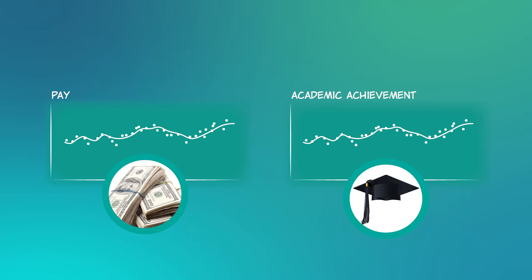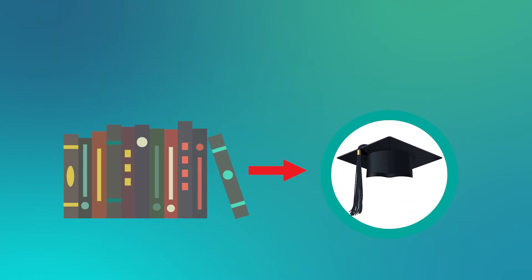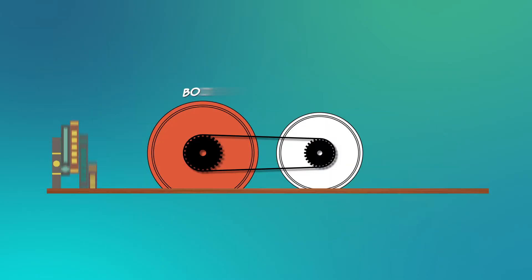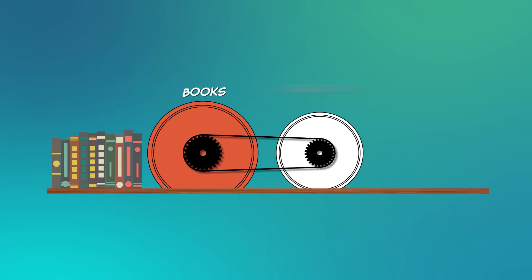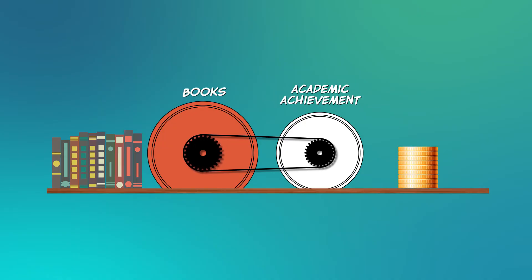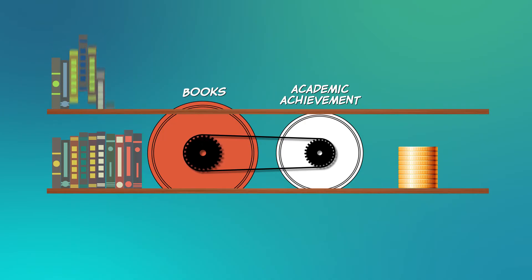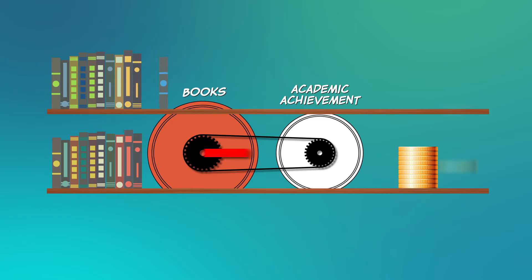Studies have shown that if you grow up in a house with lots of books on the shelves, you tend to do better in school. So books on the shelves cause you to do better at school, which leads to more pay. Easy enough — so simply add books to your shelves and you'll make a lot more money.